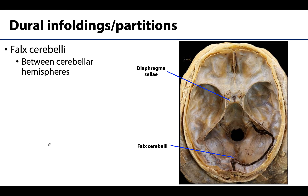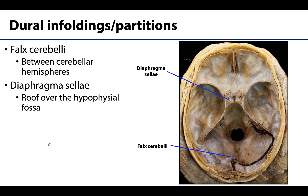The last two dural partitions — in this particular image the tentorium cerebelli has been removed to get a glimpse of the falx cerebelli, which is right in this region. This partition is quite small, and during life is located between the cerebellar hemispheres. It also has an attachment on the internal occipital protuberance similar to the falx cerebri, but it will extend inferiorly, and the occipital sinus will be associated with the falx cerebelli.